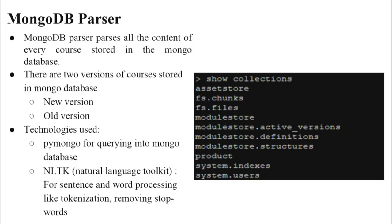The MongoDB Parser parses the content of every course stored in the Mongo database. The content is stored in four collections: module store, module store active versions, module store definitions, and module store structures. There are two versions of courses: the old version stored in module store only, and the new version collectively stored in the other three collections. The technologies used are PyMongo for querying the Mongo database and the Natural Language Toolkit for processing sentences and words.